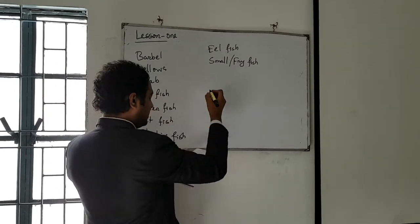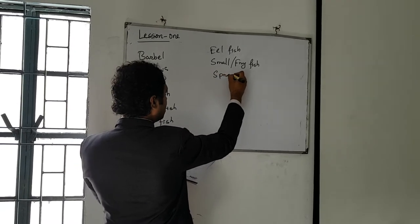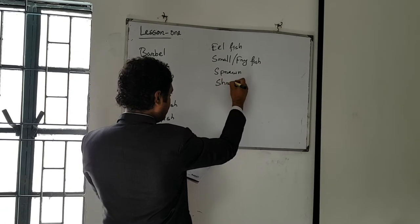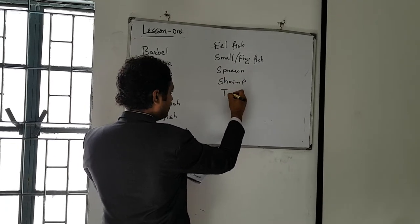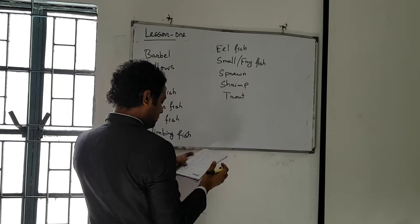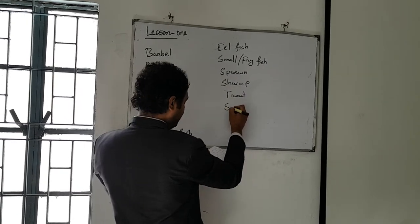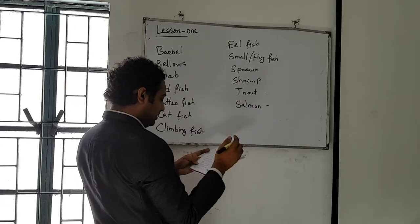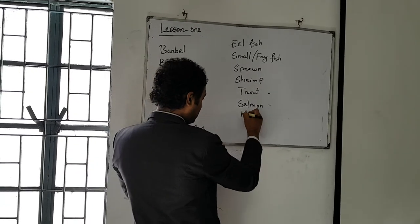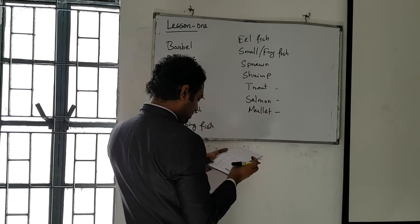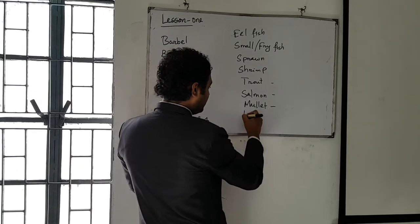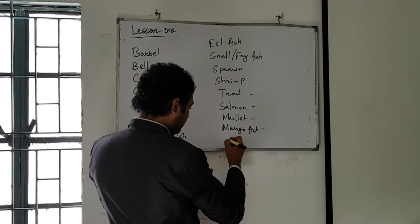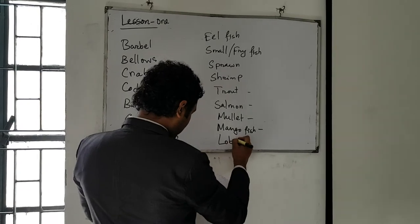Then sprung. Shrimp. Trout. Salmon. These are very popular fish around the world — trout and salmon. Then mullet. Then mango fish. And the last one is lobster, quite popular as well.